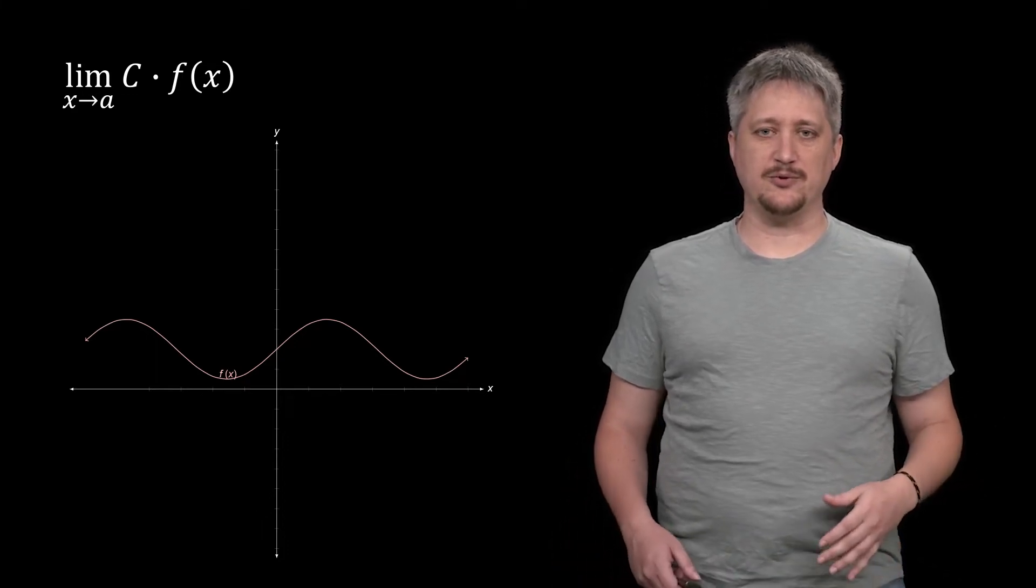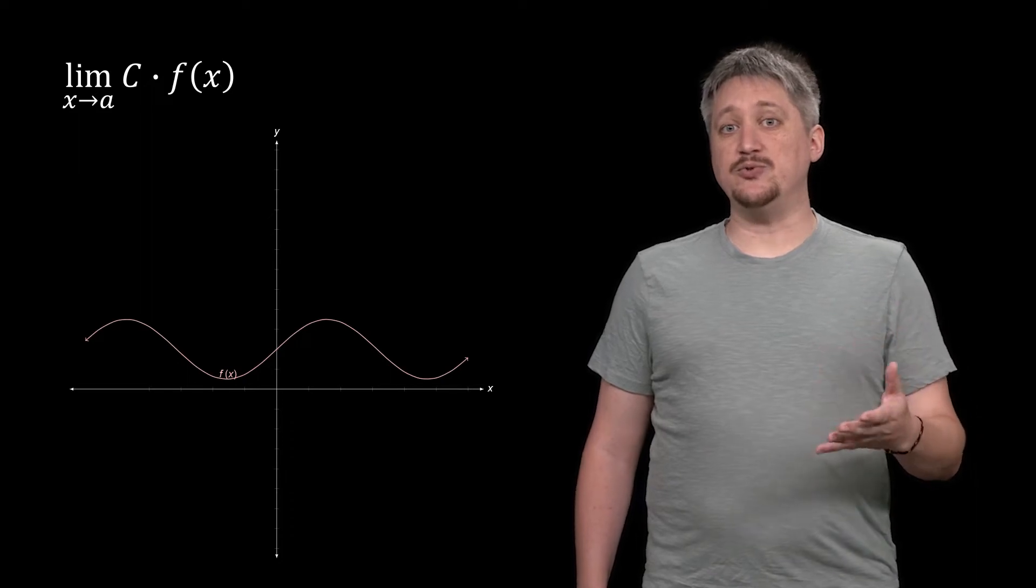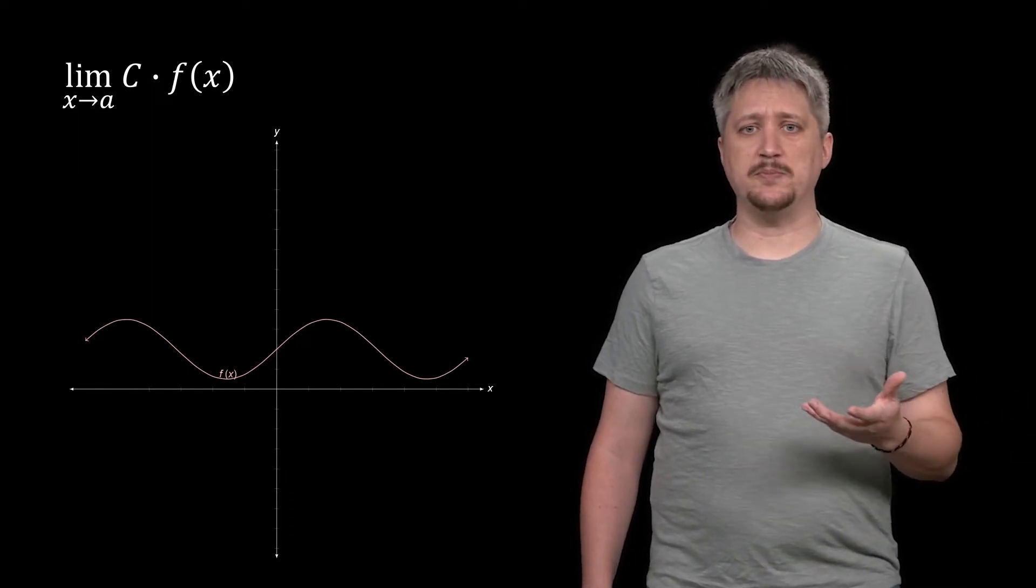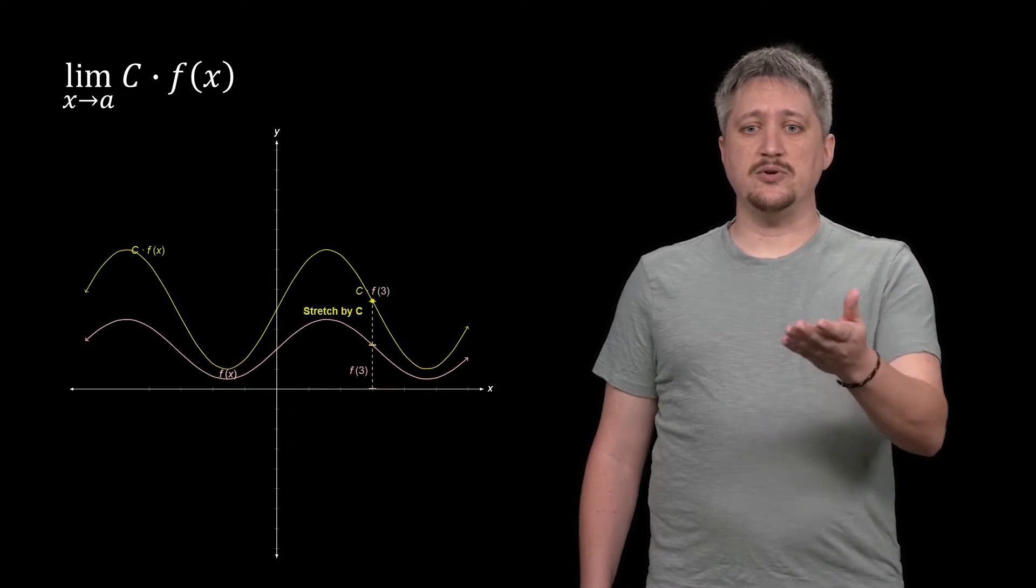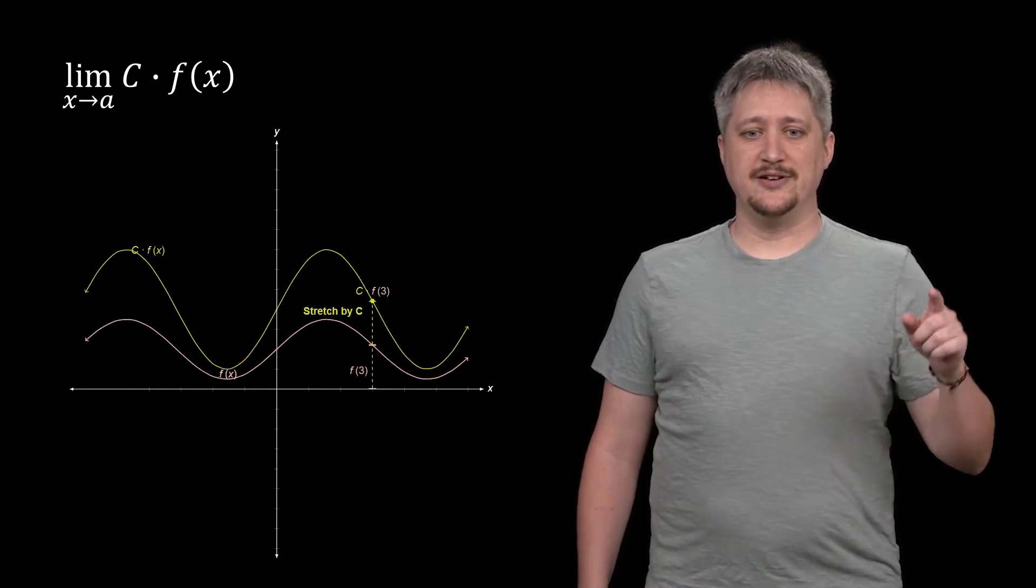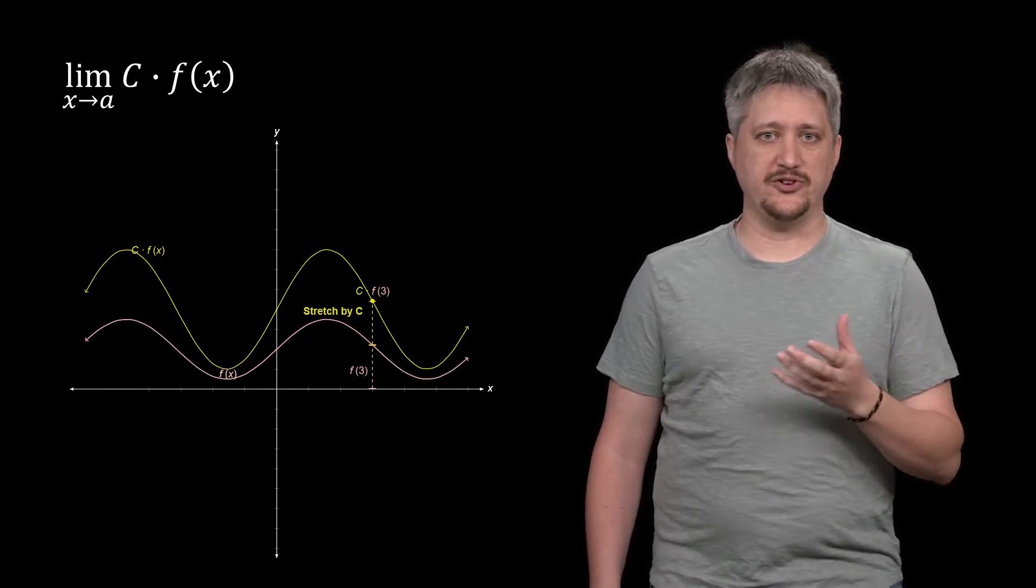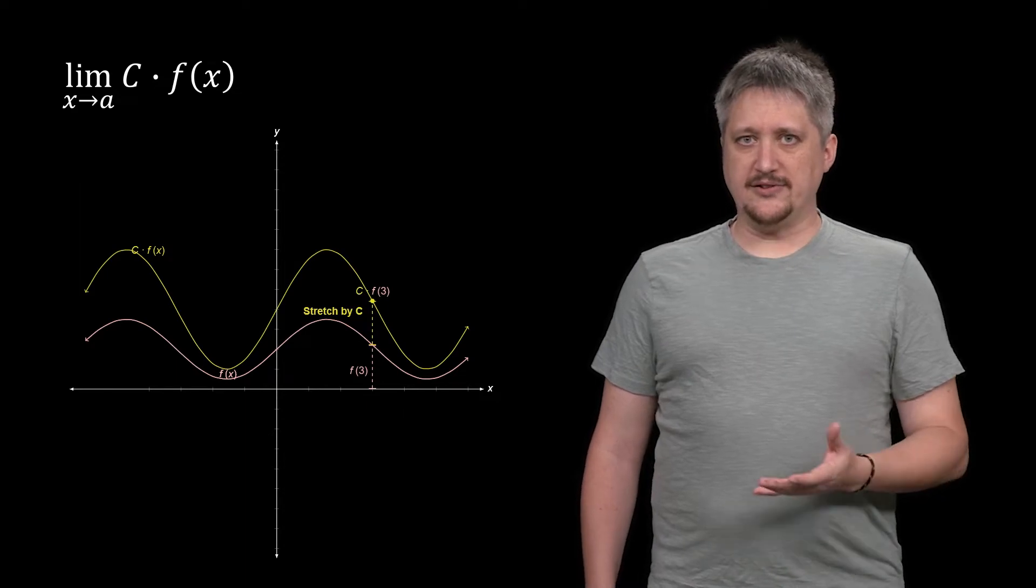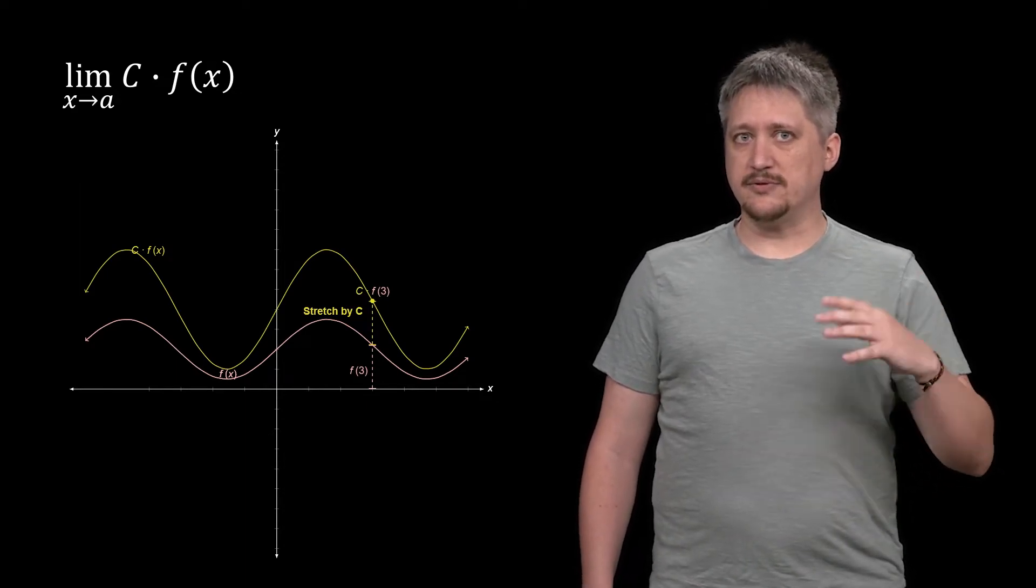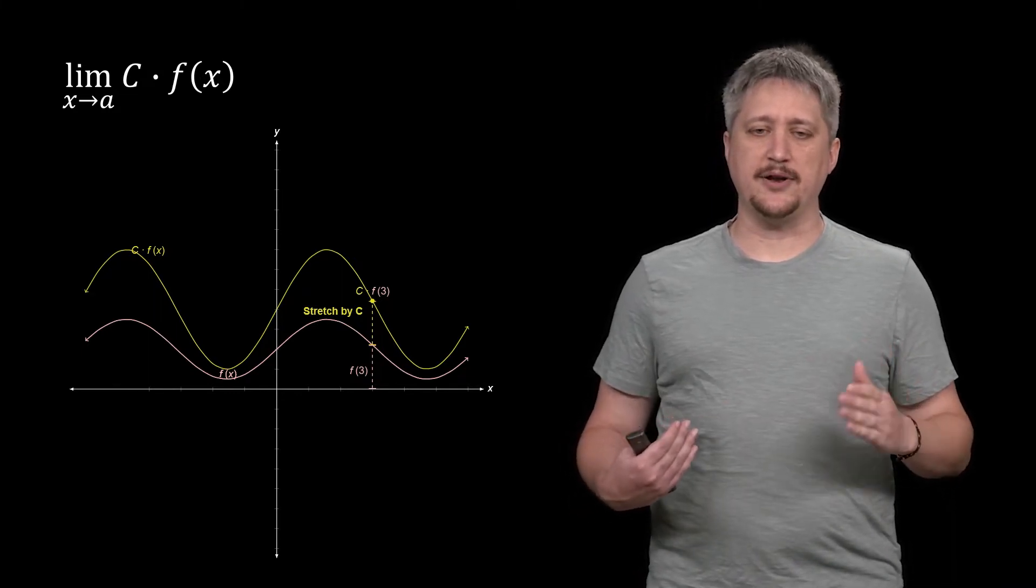If we take a function f like this one, and this applies to really any kind of function, what does c do? If you remember from pre-calculus, multiplying by a constant scales our function. Here the yellow curve represents c times f for some value of c. It could also flip if c is negative, but the idea is that it's a stretch factor.